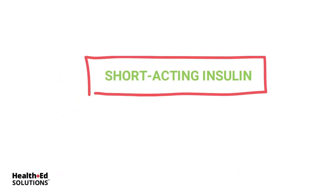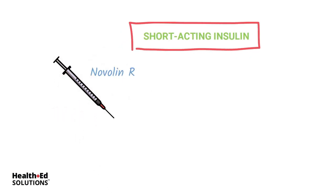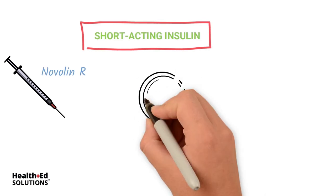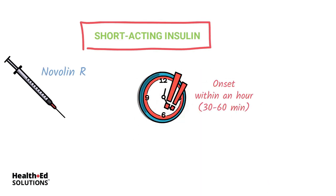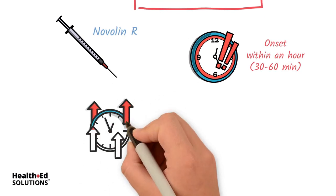Next, we have the short acting. We used to use short acting, or regular insulin, most often, but most hospitals have switched over to rapid acting. The onset for short acting is within one hour — some will start working within 30 minutes, but all of them will be working within one hour of giving that insulin injection. It takes a little bit longer for short acting to peak.